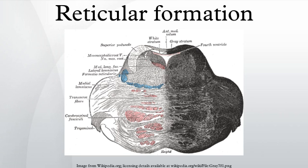Sleep and consciousness: the reticular formation has projections to the thalamus and cerebral cortex that allow it to exert some control over which sensory signals reach the cerebrum and come to our conscious attention. It plays a central role in states of consciousness like alertness and sleep. Injury to the reticular formation can result in irreversible coma. Habituation is a process in which the brain learns to ignore repetitive, meaningless stimuli while remaining sensitive to others. A good example is when a person can sleep through loud traffic in a large city, but is awakened promptly by the sound of an alarm or crying baby.